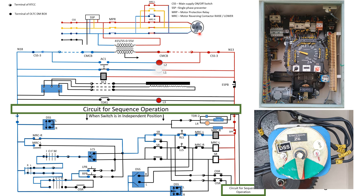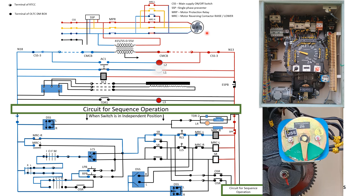Now, how will the motor stop rotating? There is a special provision — the DSS switch situated here. We will understand the working of this DSS switch and how the cutoff is provided to the motor once the tap position has changed. Below this DSS switch there is a special plunger which rotates with its shaft at different positions, and because of this DSS switch, once the tap position has changed, the motor will stop rotating.